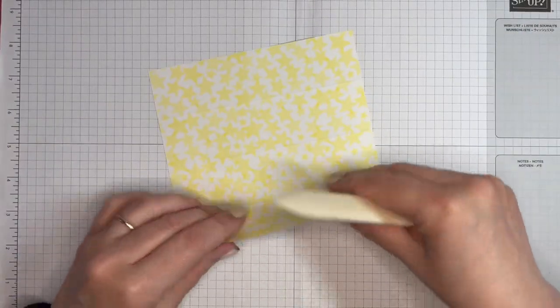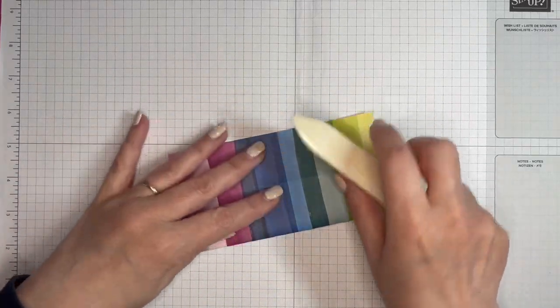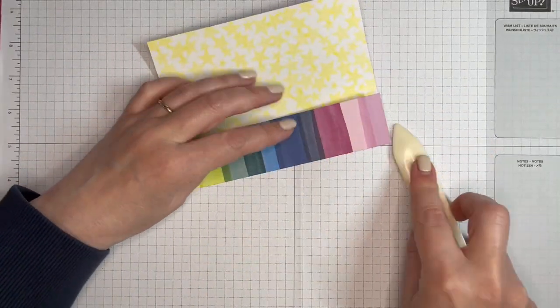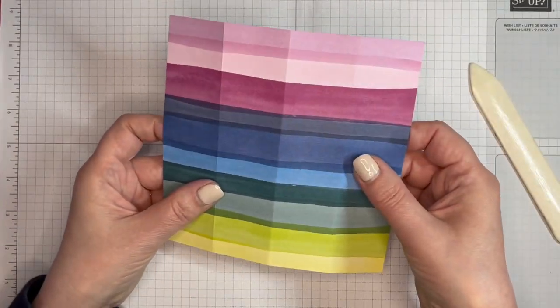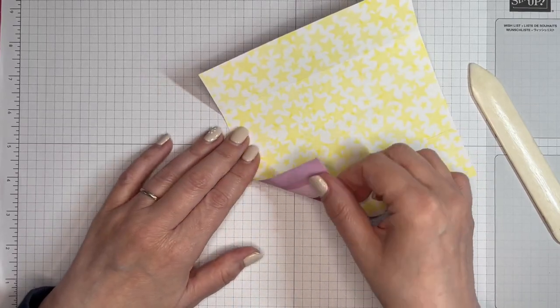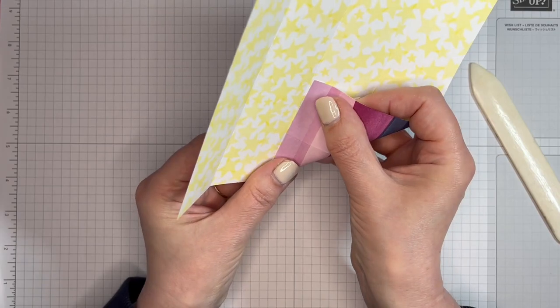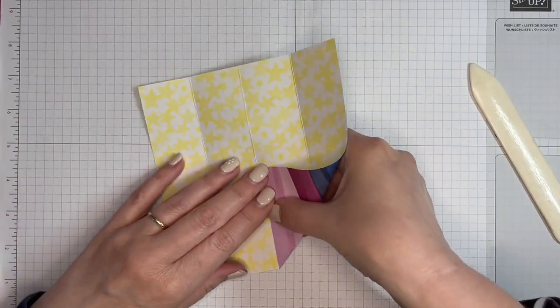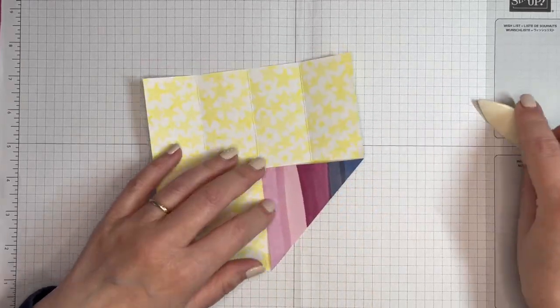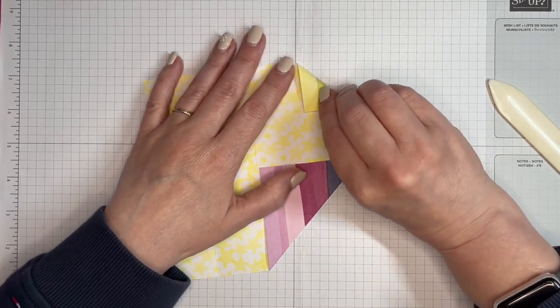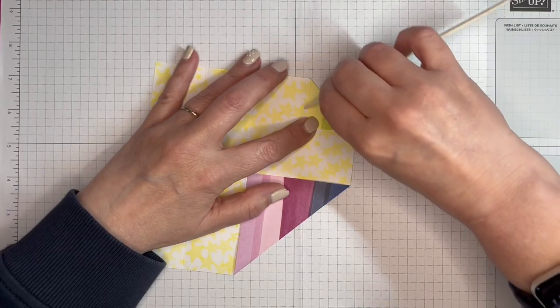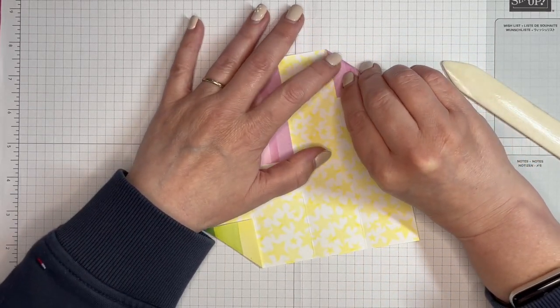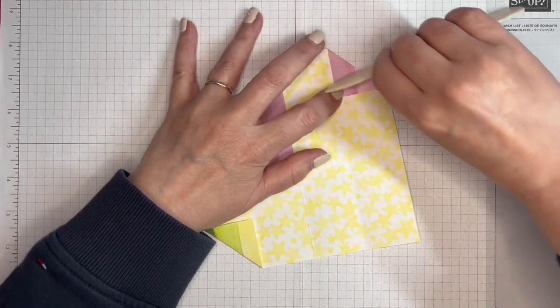Now just gently burnishing those score lines like so. So I want this to be the outside. I'm folding this top corner to the middle score line, just that edge along by that score line there. Burnish that. And then this corner just up to the first score line. Burnish that.